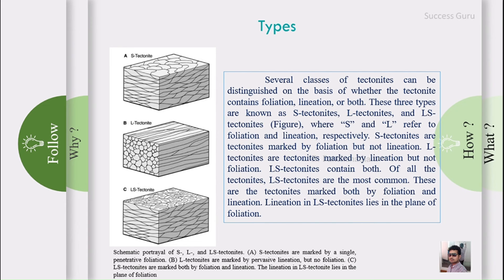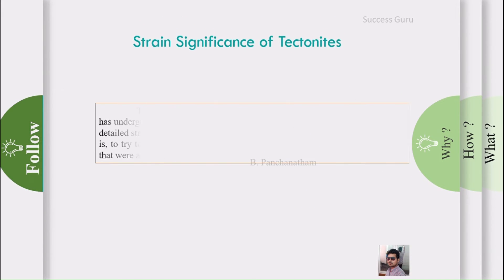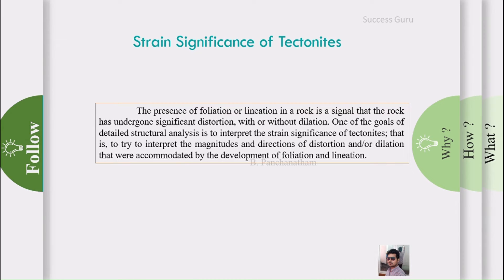Now let's see why it is important to study tectonites. A tectonite is a stratigraphically significant rock. Since a rock is termed a tectonite when it flows in a solid state, this simply indicates the rock has been deformed. The presence of foliation or lineation in a rock is a signal that the rock has undergone significant distortion, with or without dilation.